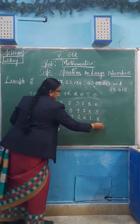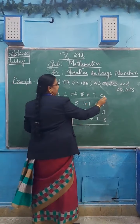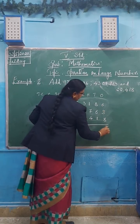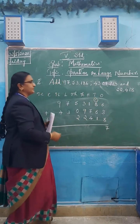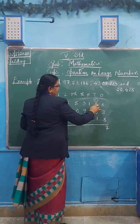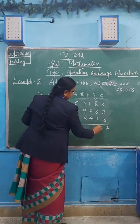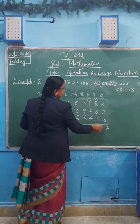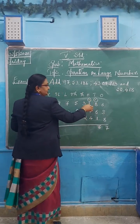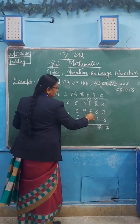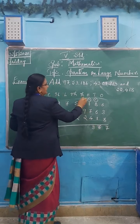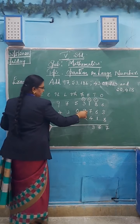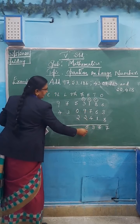Put plus and start adding. I will start from the ones place. Six plus three is nine; nine plus eight is seventeen — put seven here, carry one to tens place. One plus eight is nine; nine plus six is fifteen; fifteen plus one is sixteen — write six in tens place and carry one to hundreds place. One plus one is two; two plus seven is nine; nine plus four is thirteen — put three here and carry one to thousands place. One plus three is four; four plus nine is thirteen; thirteen plus two is fifteen — write five in thousands place and carry one.